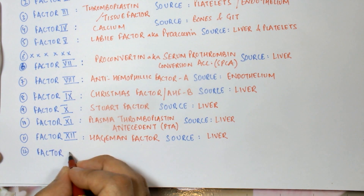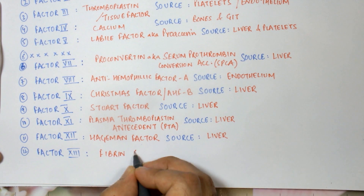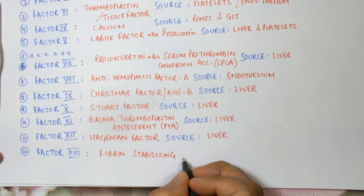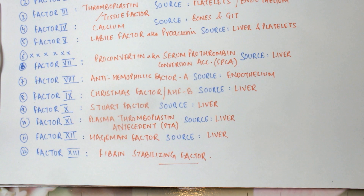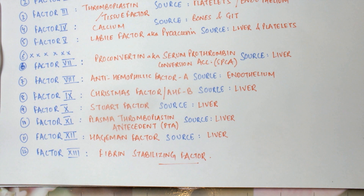Factor number thirteen is a very important factor known as the fibrin stabilizing factor. What this factor does is stabilize the fibrin monomers formed after fibrinogen is converted into fibrin. Initially these fibers are not bound strongly, so factor number thirteen produces covalent bonds between them and forms the strong fibrin mesh.